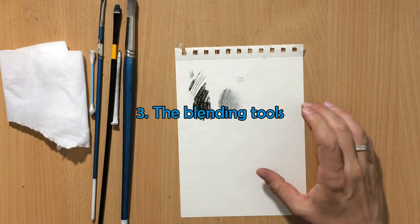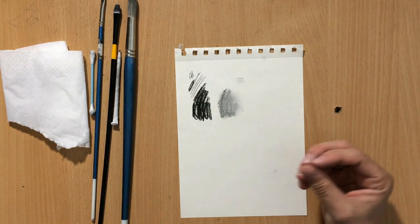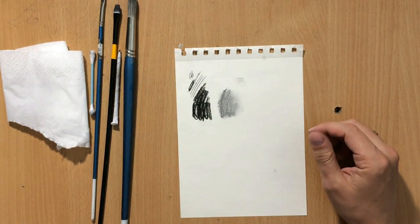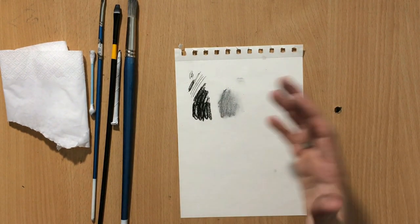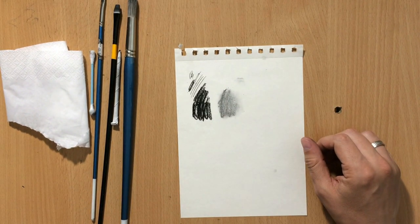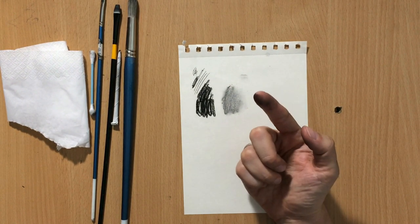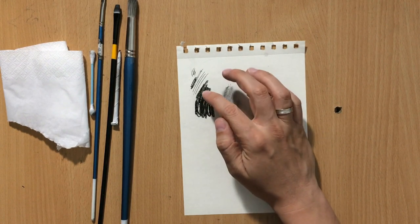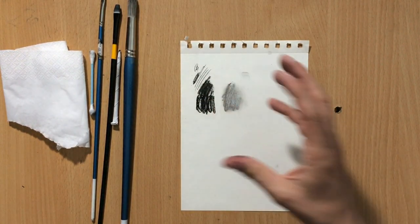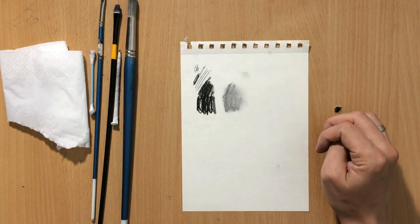The third category is blending tools. When working with charcoal, one main advantage is it can be blended and moved around easily to create nice transitions and value ranges. You can use your finger—it's a pretty good blending tool but not perfect. It can't give enough precision for smaller or more detailed work, and different blending tools behave differently, as you'll see.